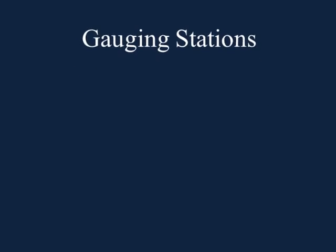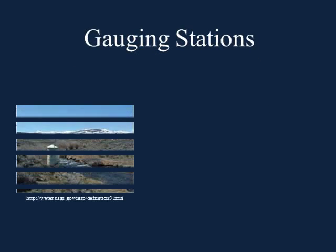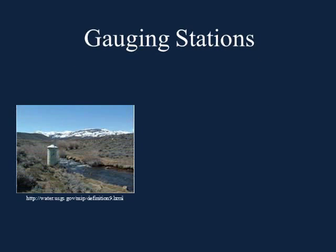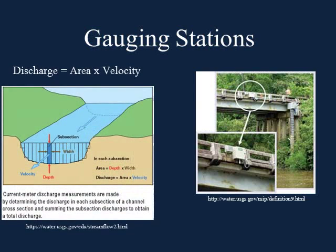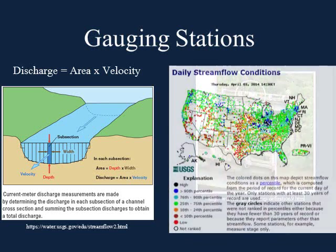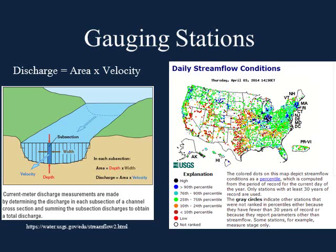Have you ever been on a stream or river and noticed a metal box or small structure on the side of a bank? Many people pass these without a second look. These are gauging stations. They are constantly measuring the height and the discharge, or stream flow, of the water. The U.S. Geological Survey currently has over 9,500 stations all over the U.S.